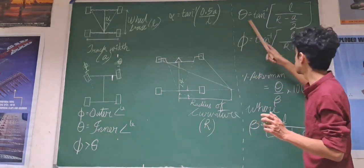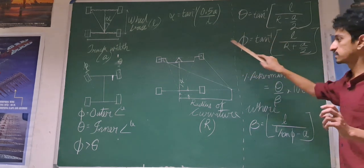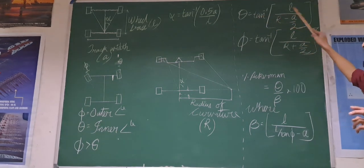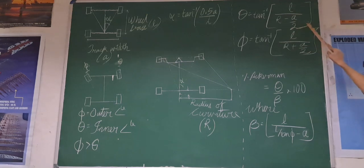We can say that theta equals tan inverse of wheelbase divided by radius of curvature minus half of track wheel.